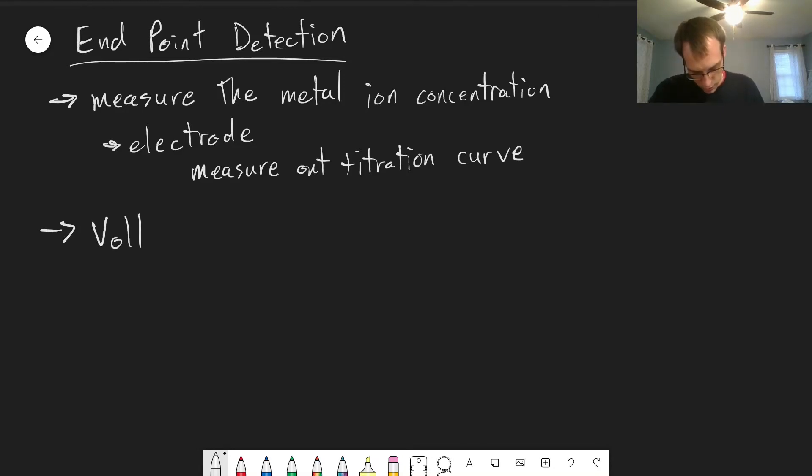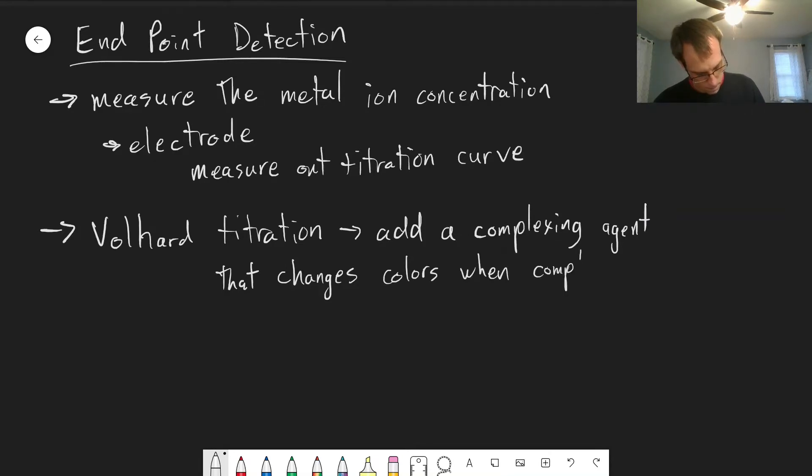One is known as a Volhard titration. And in this titration, we add a complexing agent that changes colors when complexation happens.